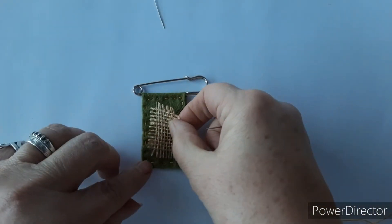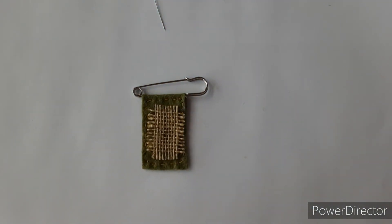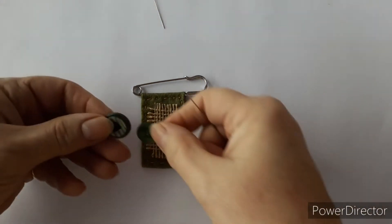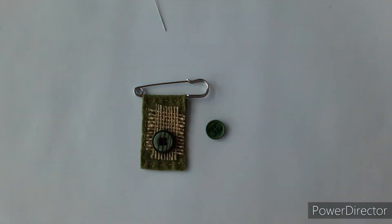Next we'll take our little bit of hessian fabric and pop that in the middle. And we're going to add a couple of buttons up to the top of it, which we can just stitch on, which will hold the hessian in place.